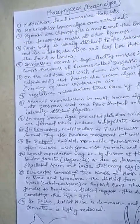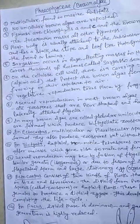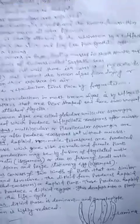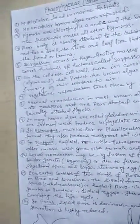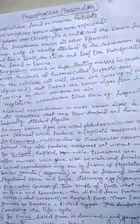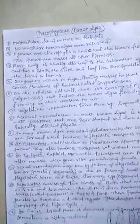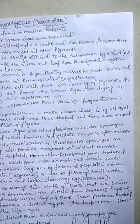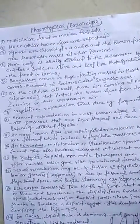Asexual reproduction in most brown algae takes place by biflagellate zoospores that are pear-shaped and have two unequal laterally attached flagella. This is a special character of brown algae — their zoospores are pear-shaped with unequal laterally attached flagella.